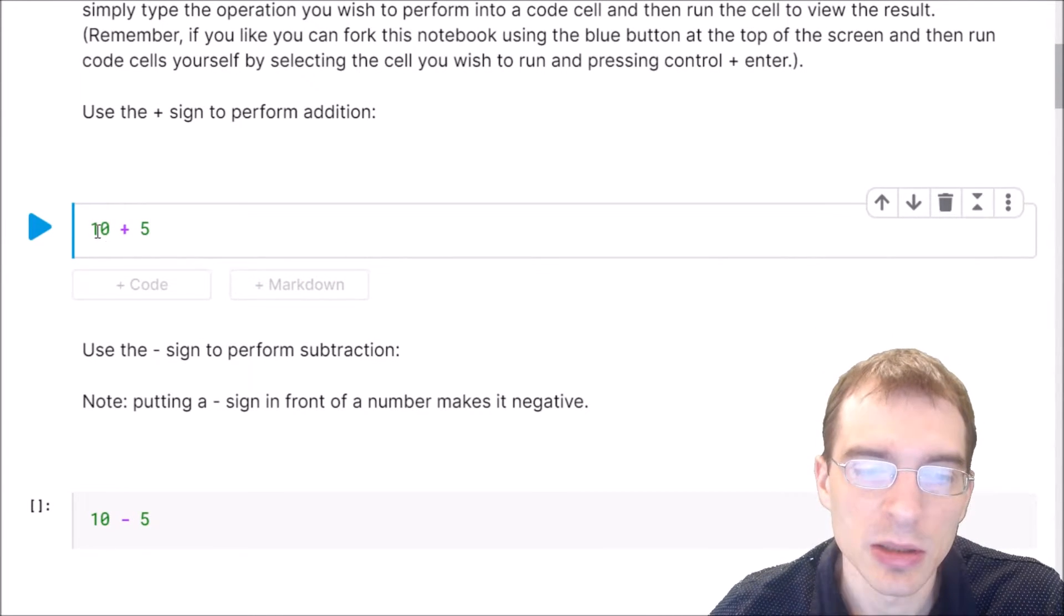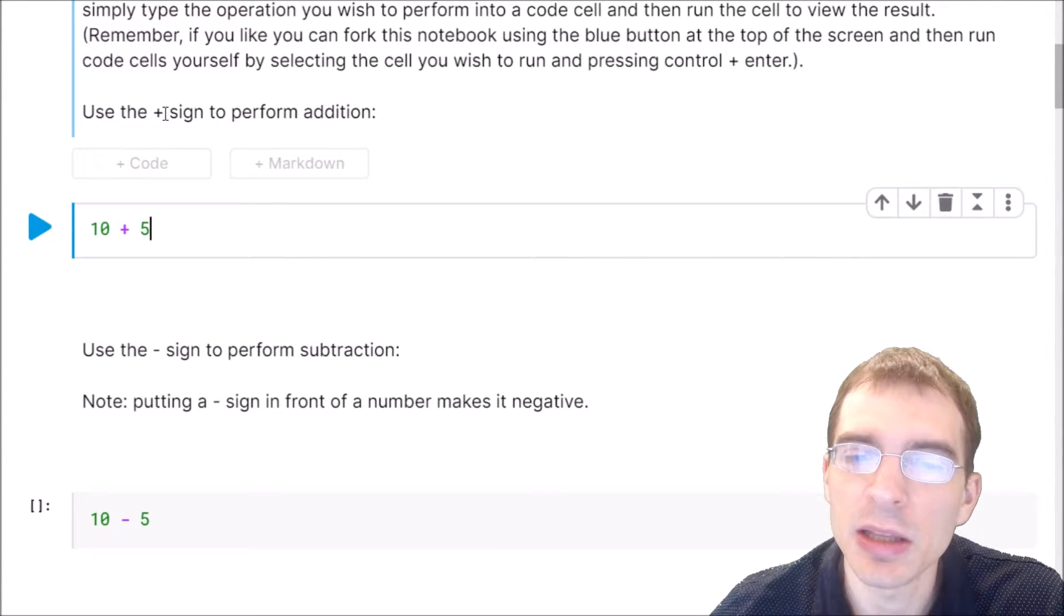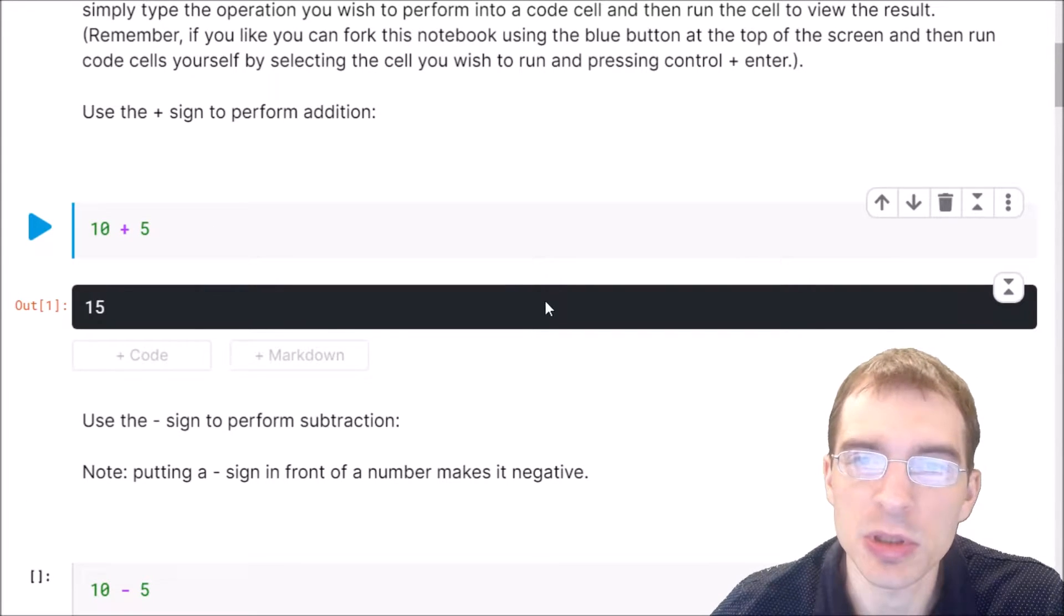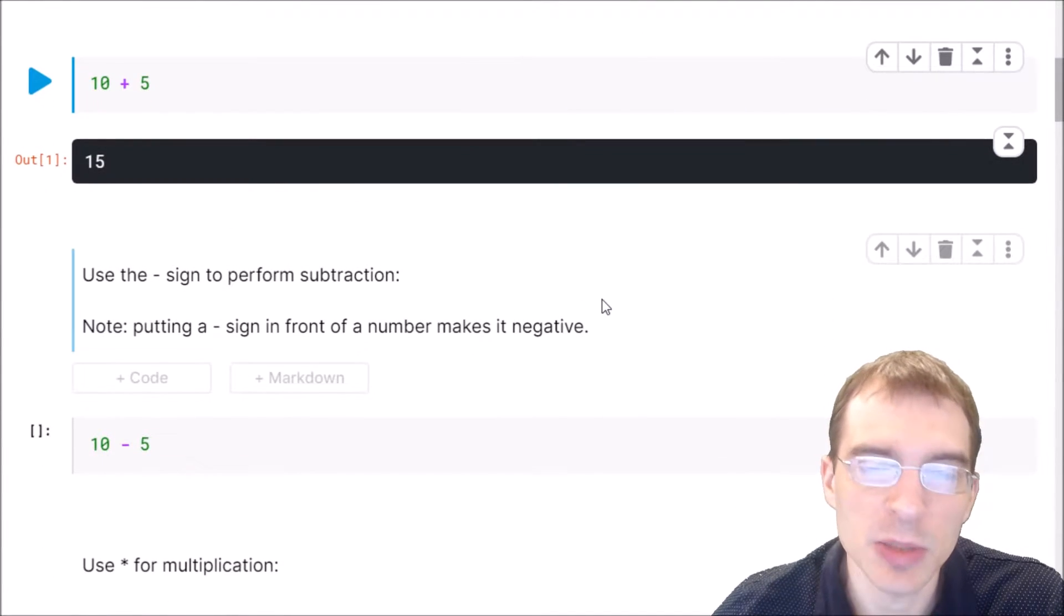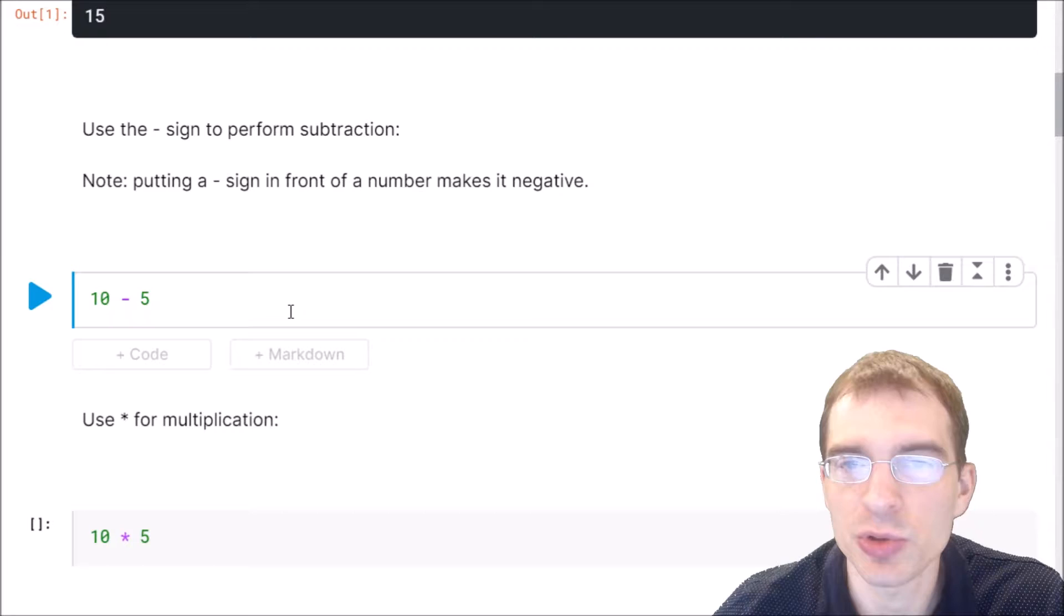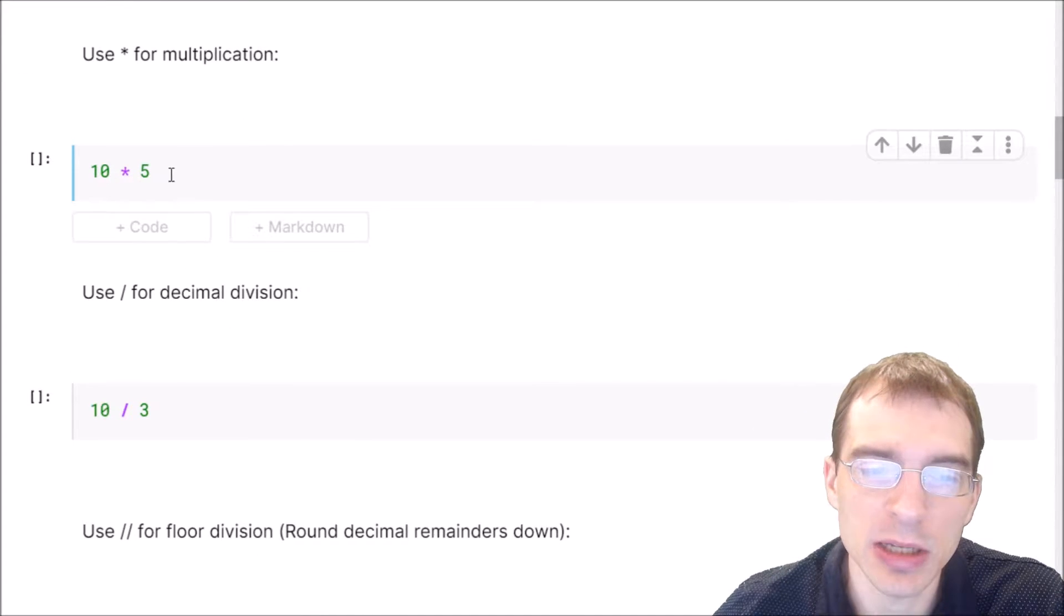In this cell, we see 10 plus 5. In Python, you use the plus sign as an operator to perform addition. When we run that, it will produce the proper result. Similarly, you use the minus sign to do subtraction. So 10 minus 5 should produce 5 as the result. For multiplication, you use the asterisk symbol. So here, 10 times 5 will be 50 when we run this.